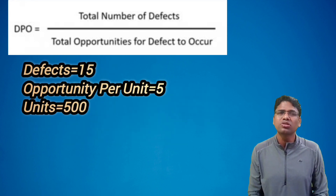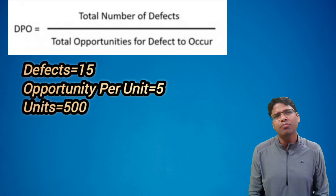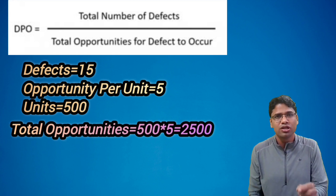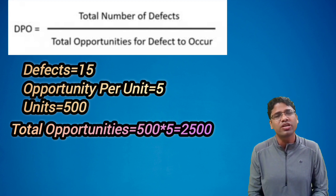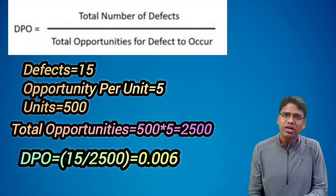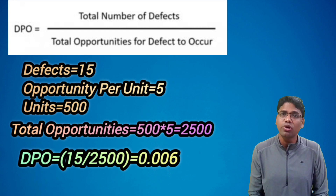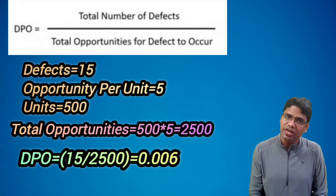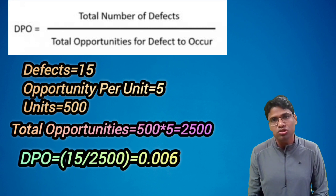Suppose there are 15 defects, opportunity per unit is 5, and number of units is 500. Total opportunity = 500 × 5 = 2500. So DPO = 15 / 2500 = 0.006.